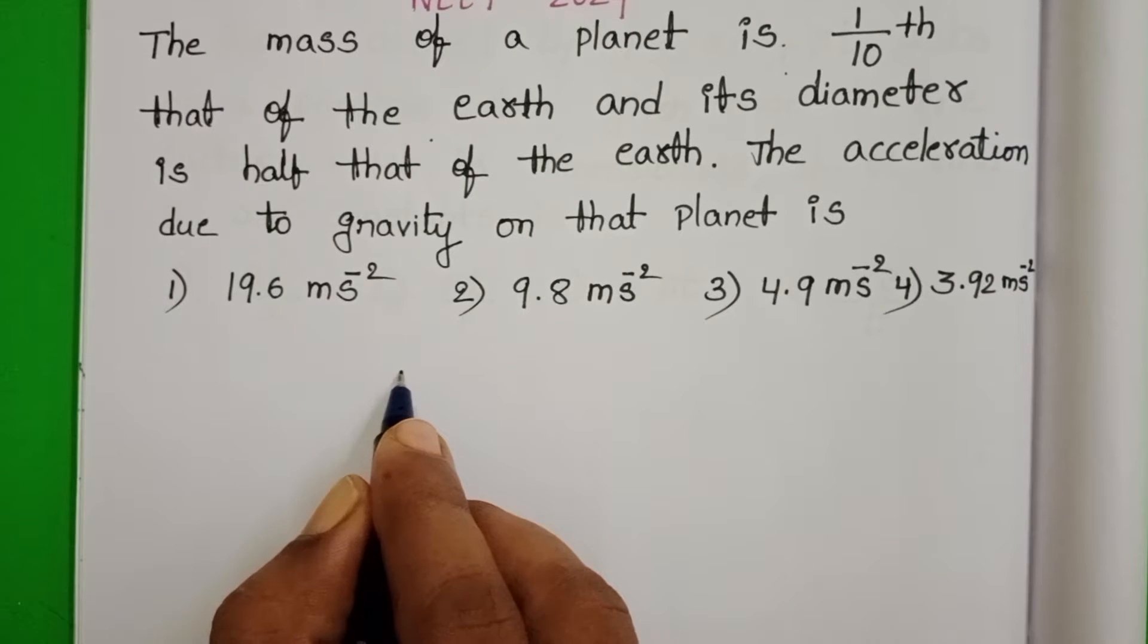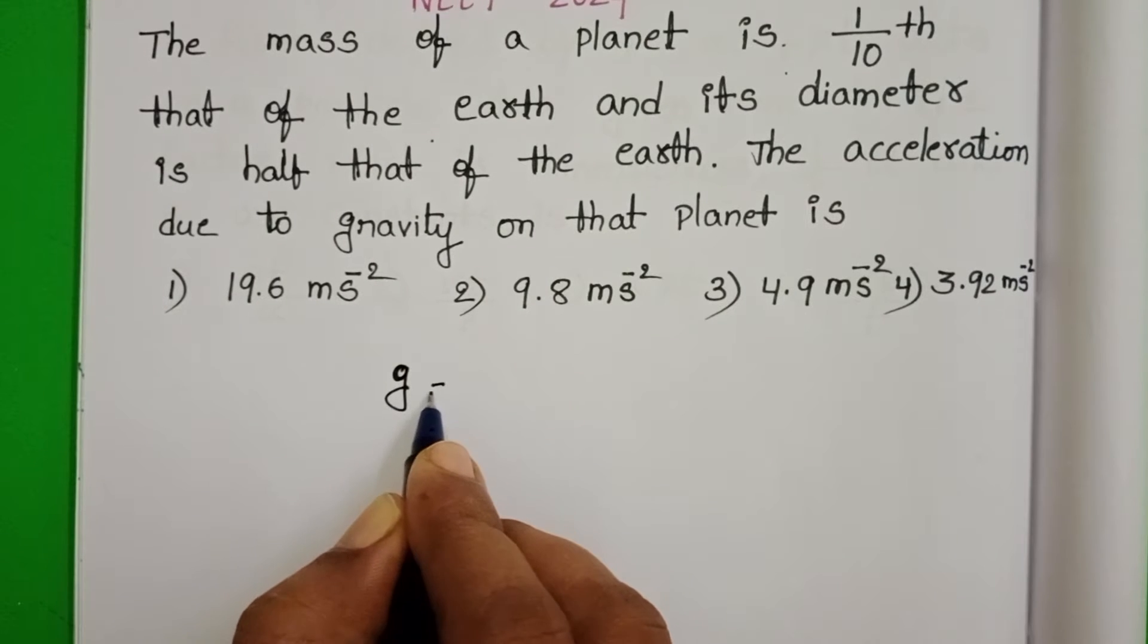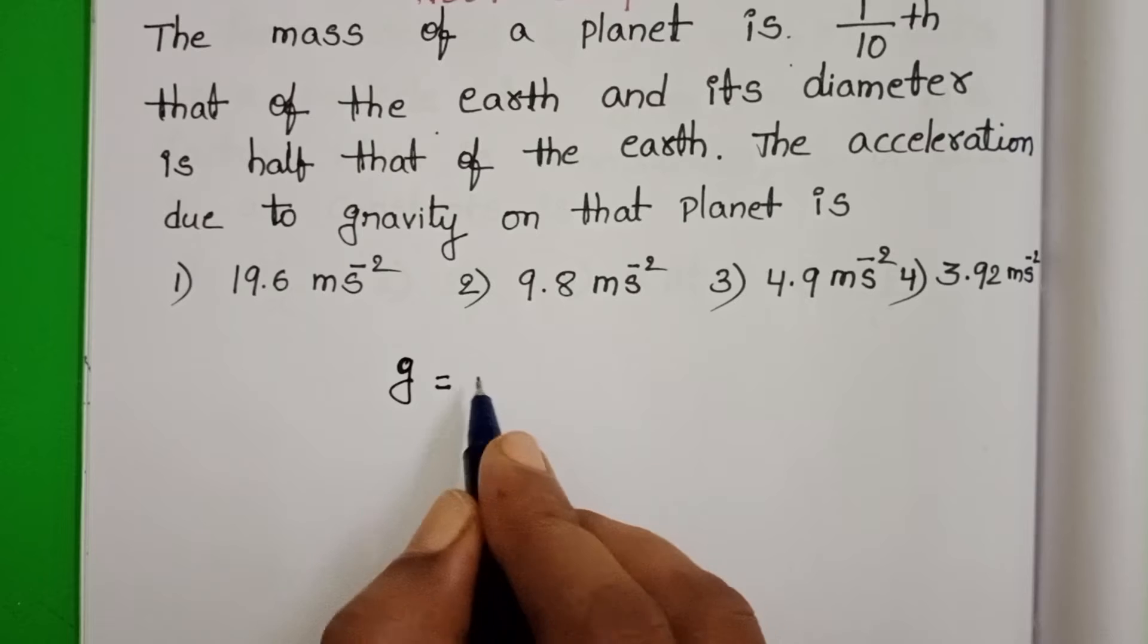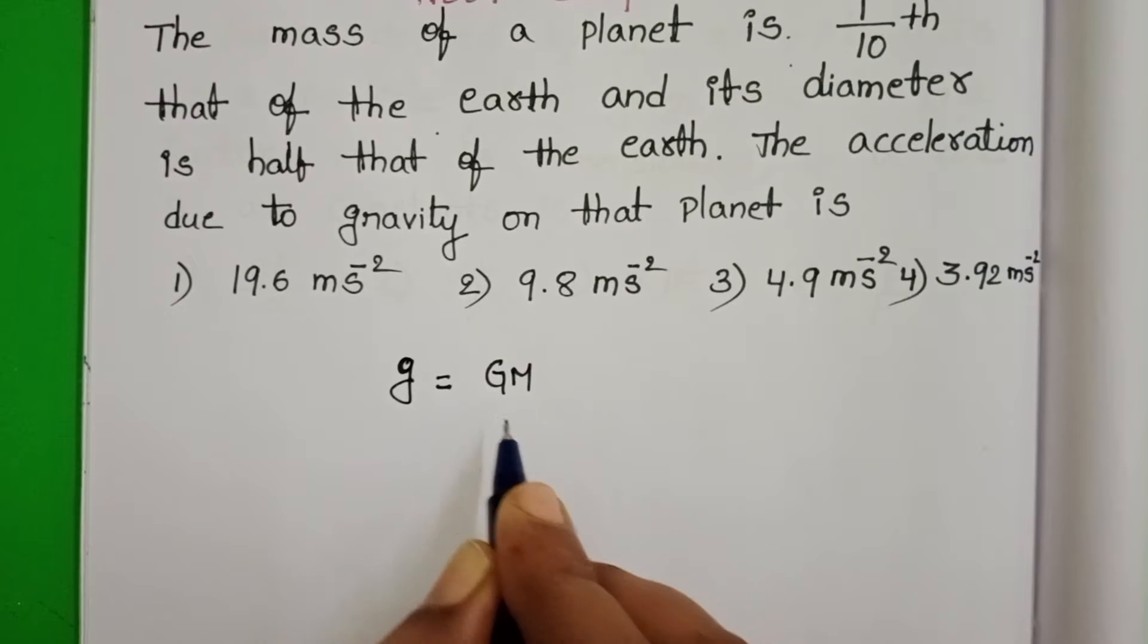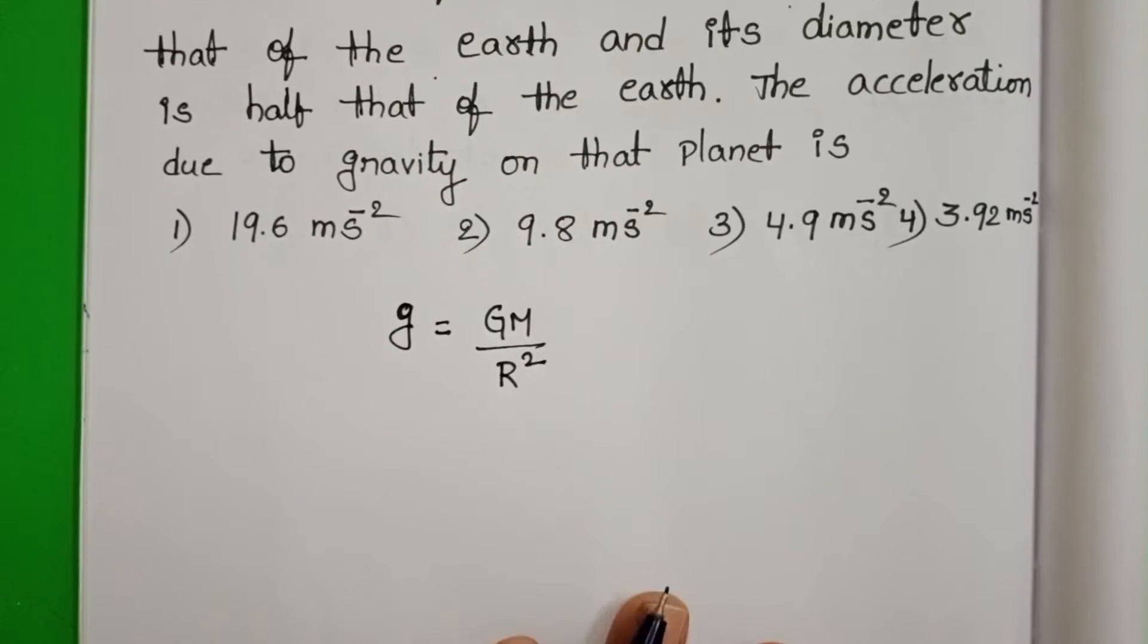We know acceleration due to gravity on the surface of the earth is equals to GM by R squared where R is the radius of the earth.